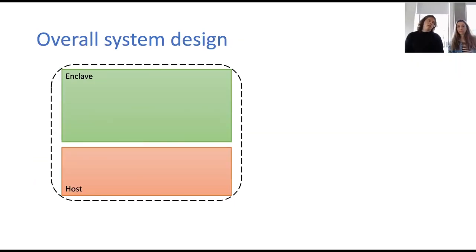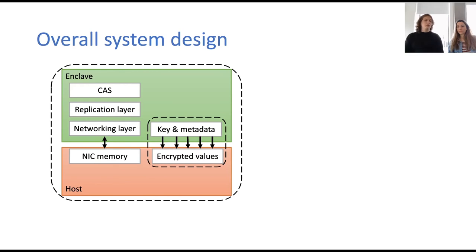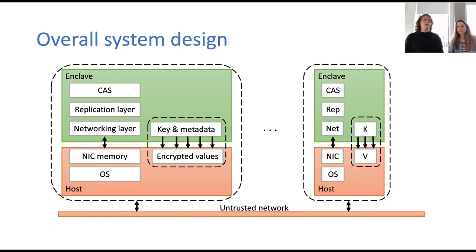Putting all these components together, we arrive at the following system design. First, we have a configuration and attestation service for fast attestation of our nodes. Then we have the replication layer, which together with the networking layer provides secure replication with non-Byzantine protocols over multiple nodes. And we have a key-value store optimized for enclaves to avoid paging. We can then replicate this design over multiple nodes to have our Avocado.